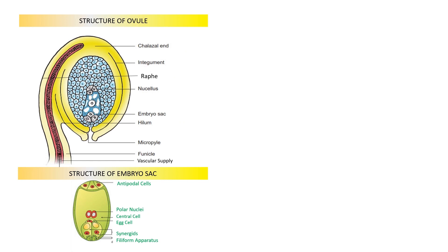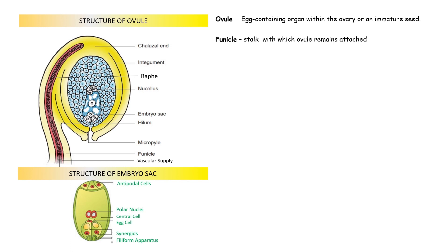Let us begin with the structure of ovule. But before that, what is an ovule? An ovule is simply an immature seed, or you can say it is an egg-containing organ which is present within the ovary. Now, there is a stalk with which the ovule remains attached to the ovary. This stalk is known as funicle. And the point of attachment of this funicle to the body of the ovule is known as hilum.